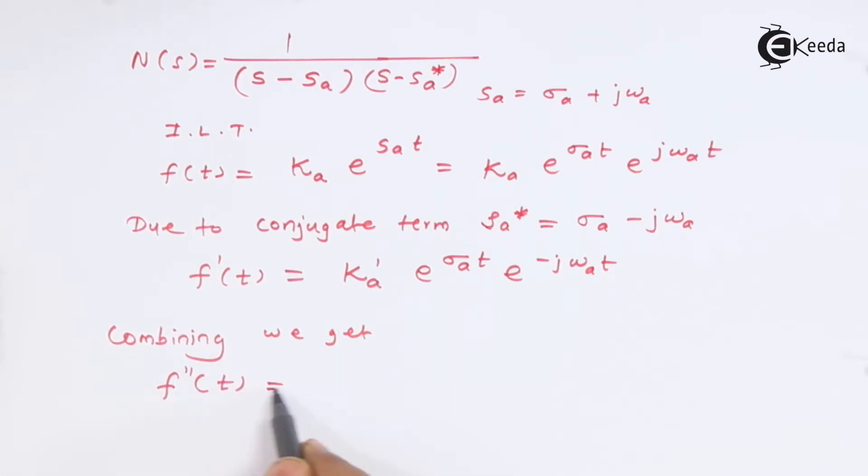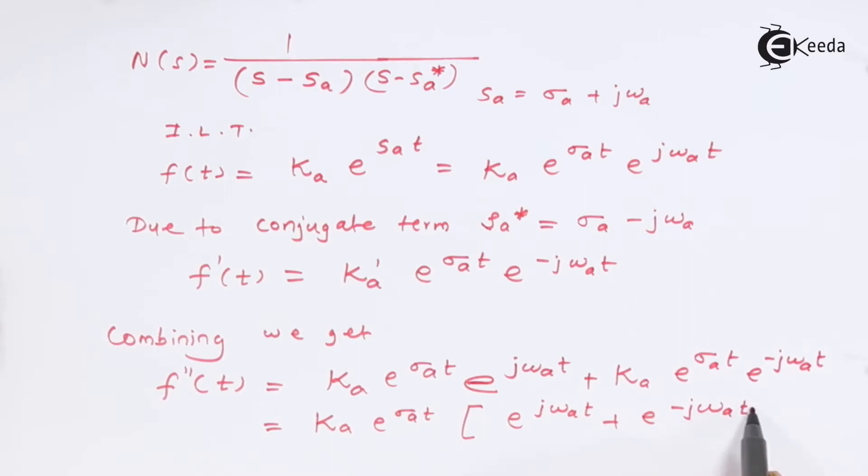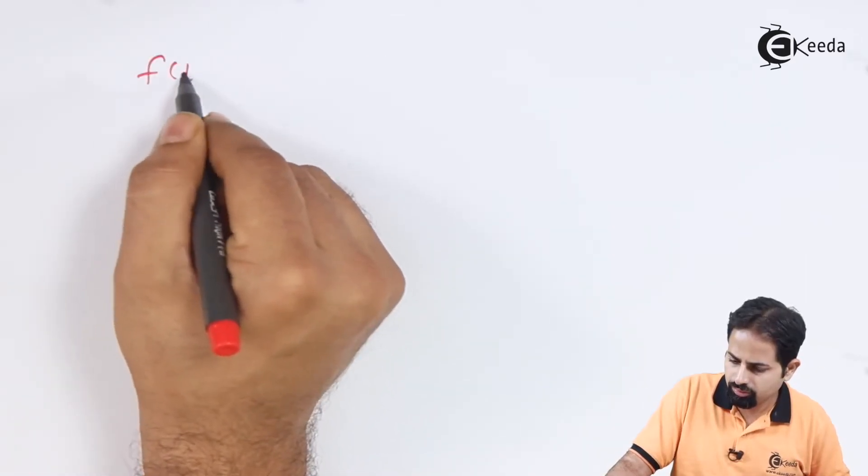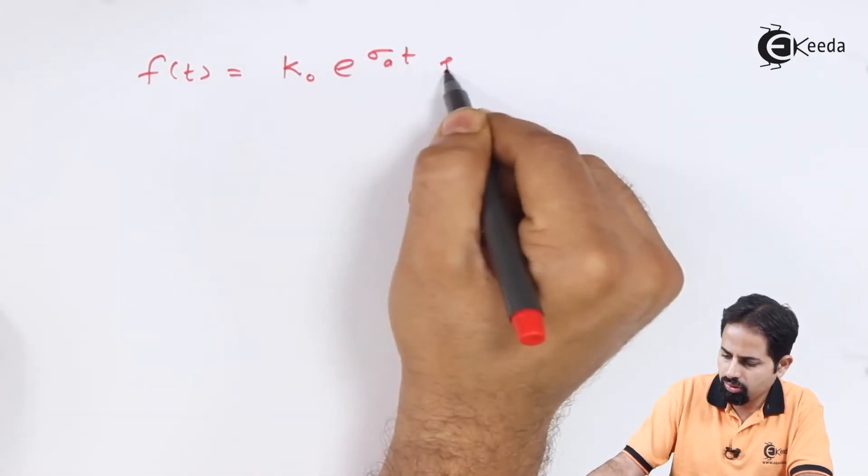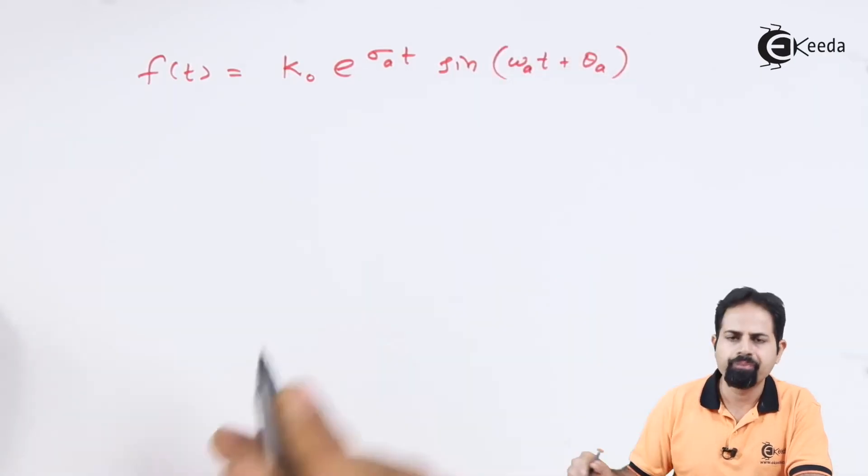So combine, you can write F double dash of T equal to and we can say that we can take both of them as common. And when you take it as common, we can always write it with sinusoidals. And when you combine it, some new constant K zero. This is what we get.